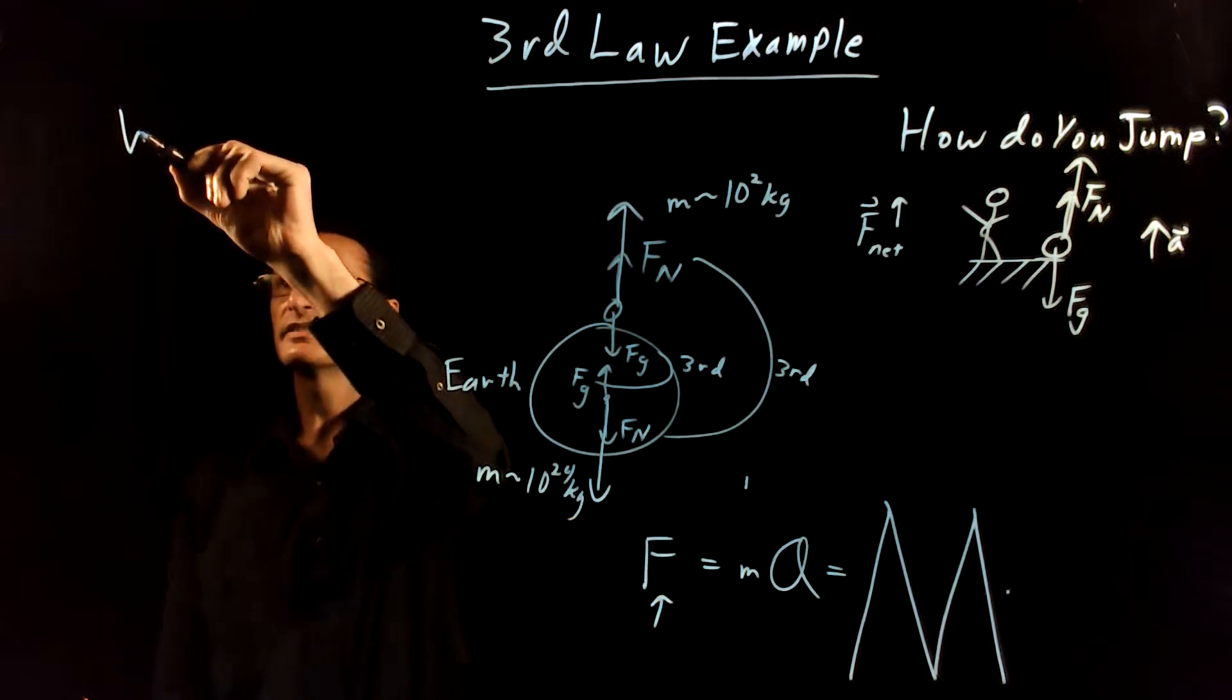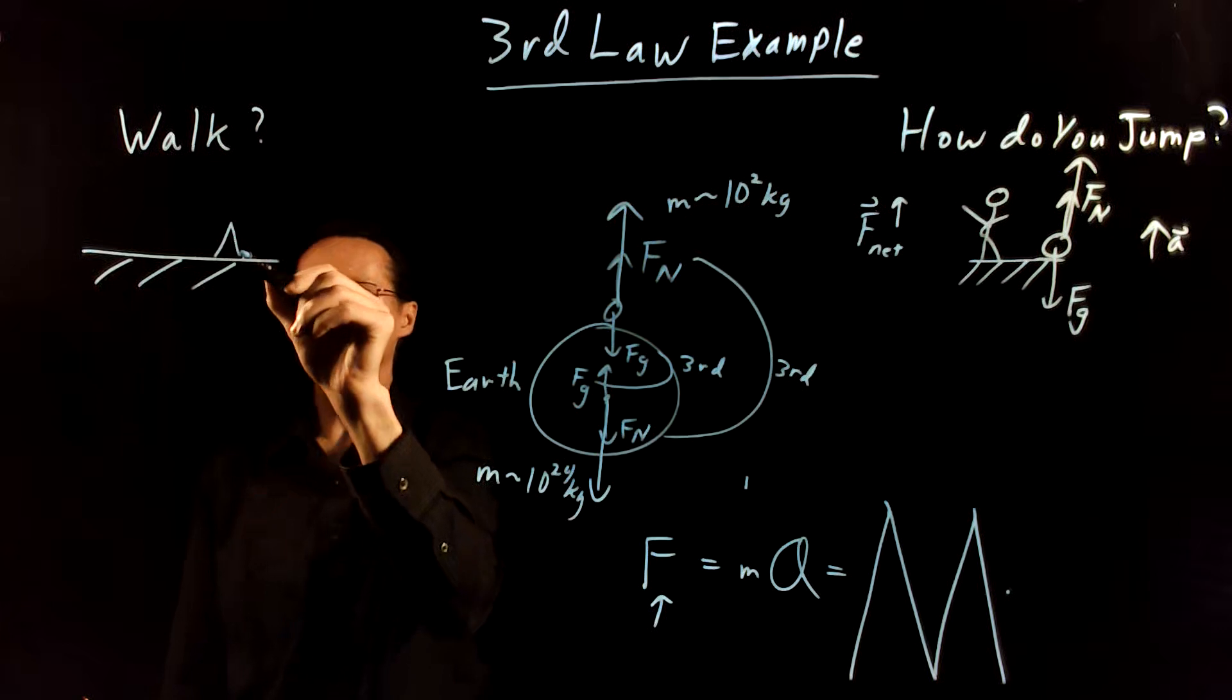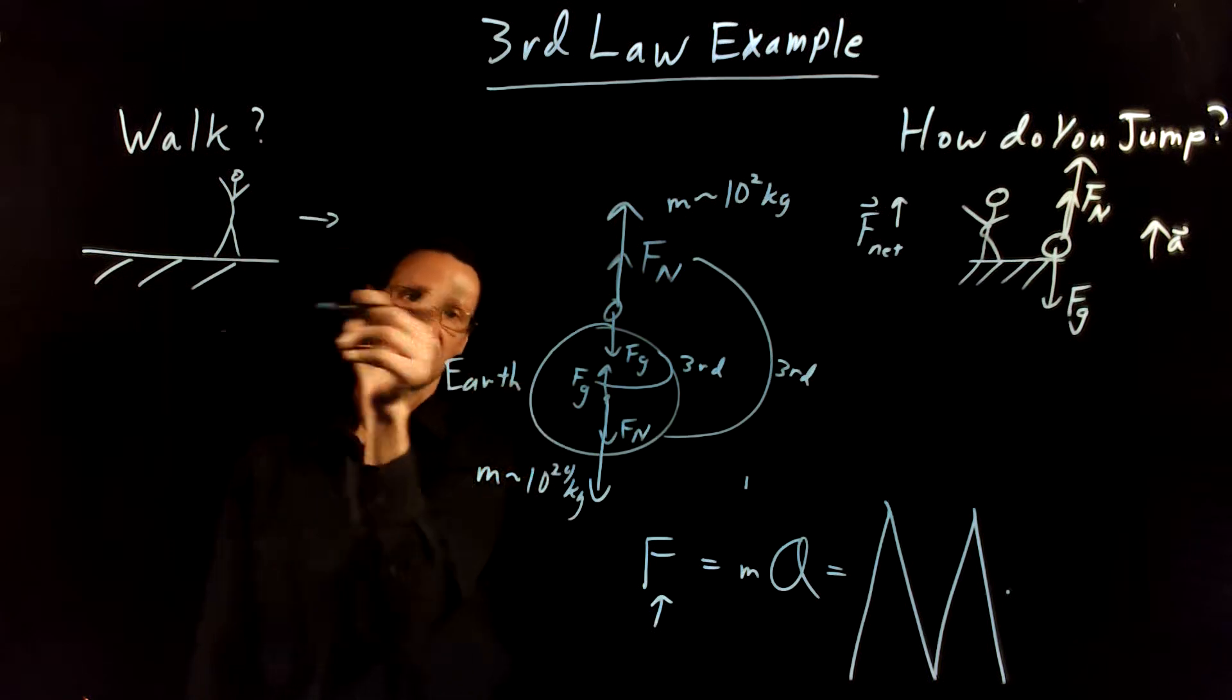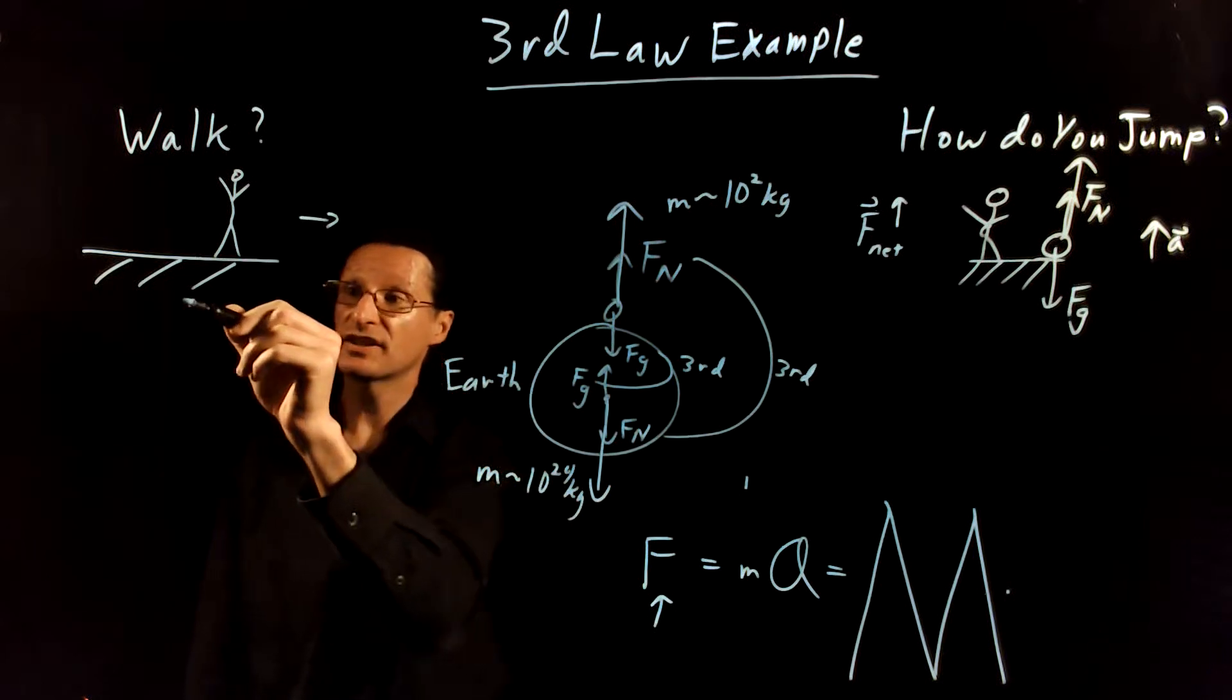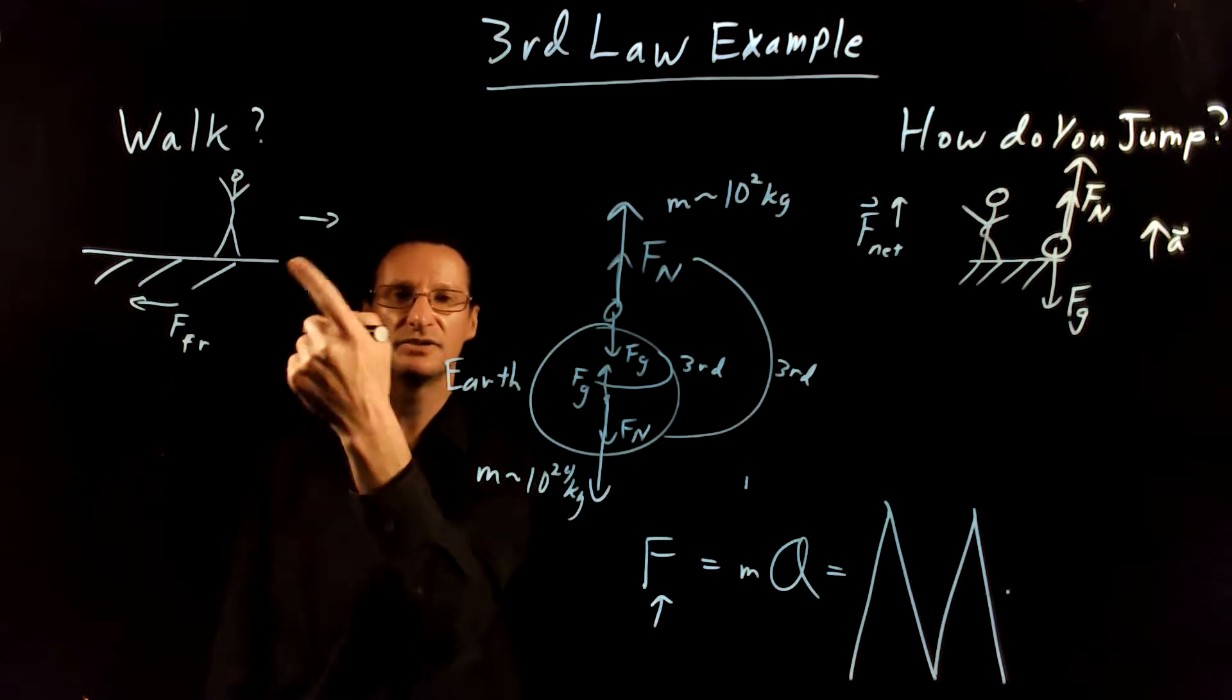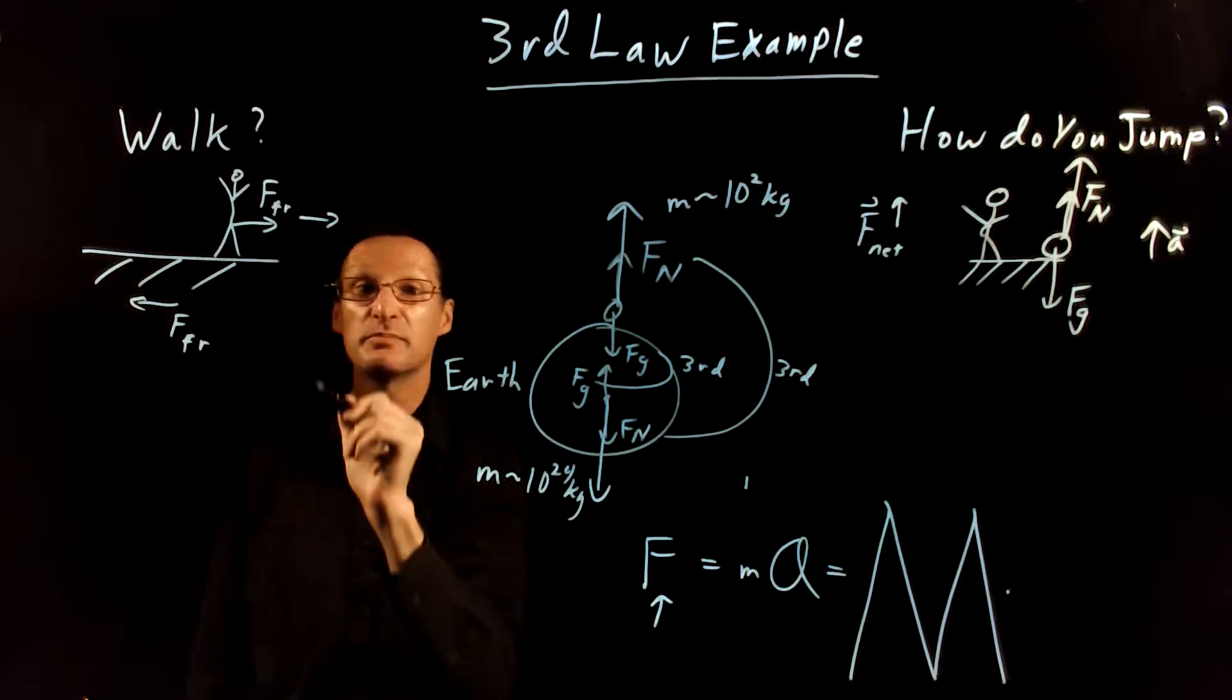One more quick thing I want to talk about here is how you walk. Keep in mind what you do there is that when you're walking, let's say you want to walk this way. How do you convince yourself to get a force that way? You can't put a force on yourself. You need an external agent to do that. What you do is you push on the ground and you put a force due to friction that way on the ground. Well, how does that force cause you to walk? Well, in reaction to that, the ground puts a force on you that's equal and opposite. And of course, it also must be due to friction.